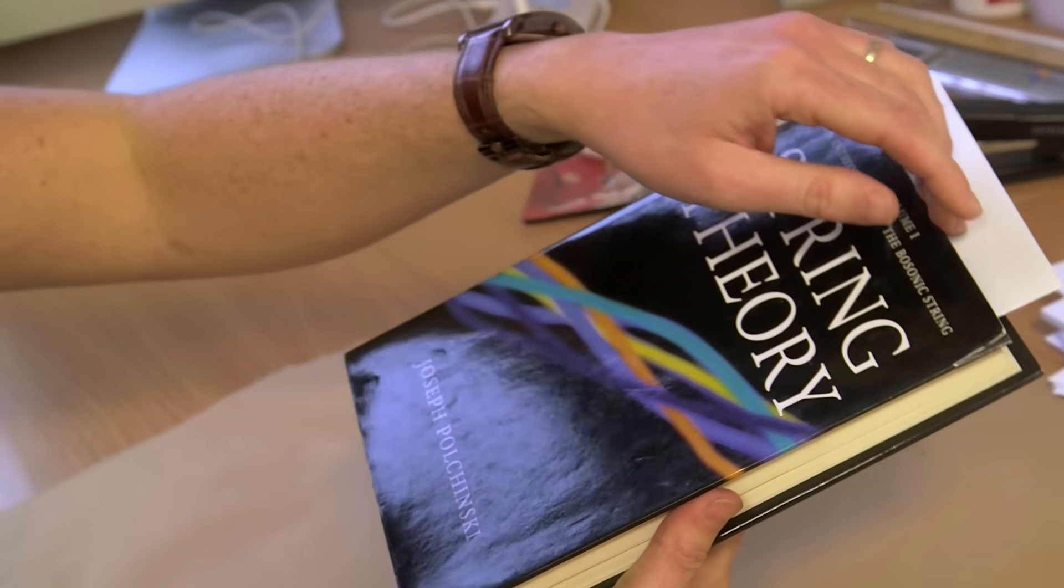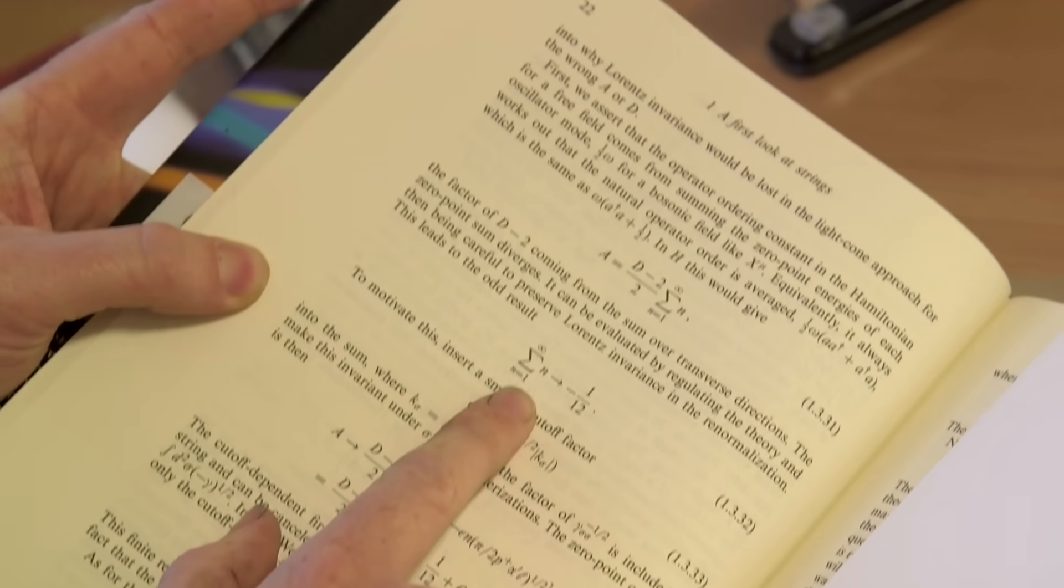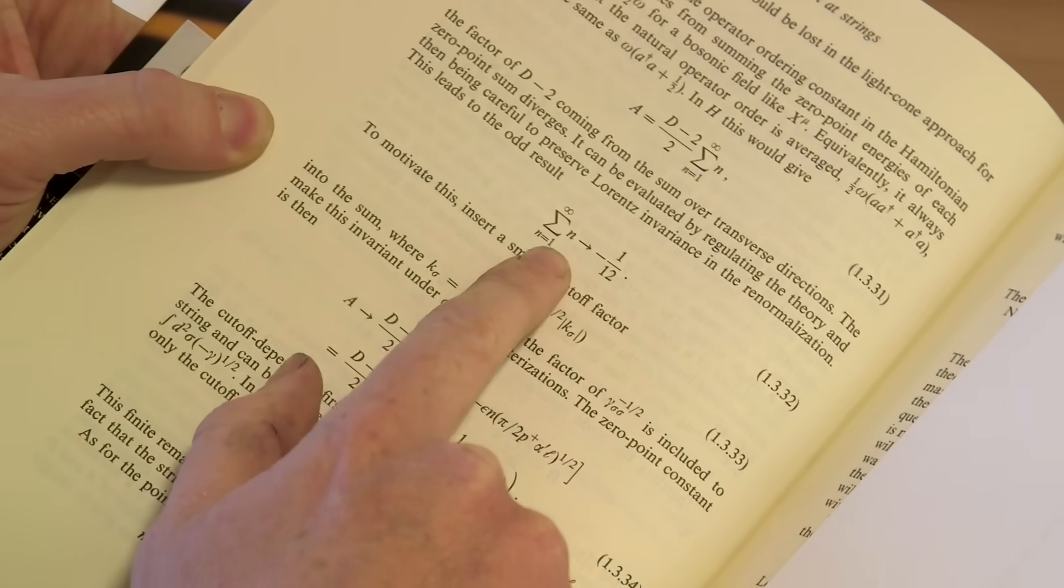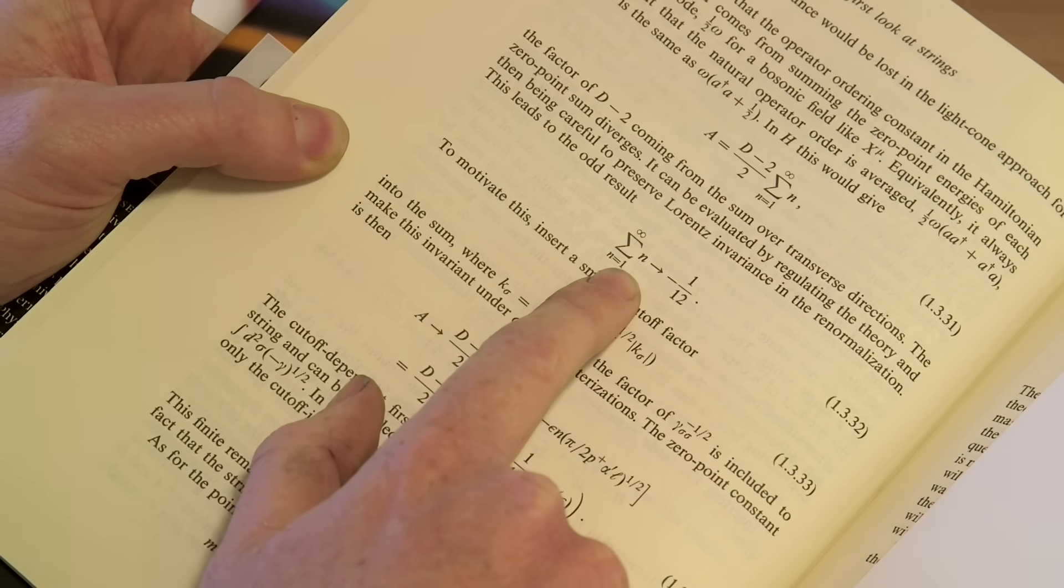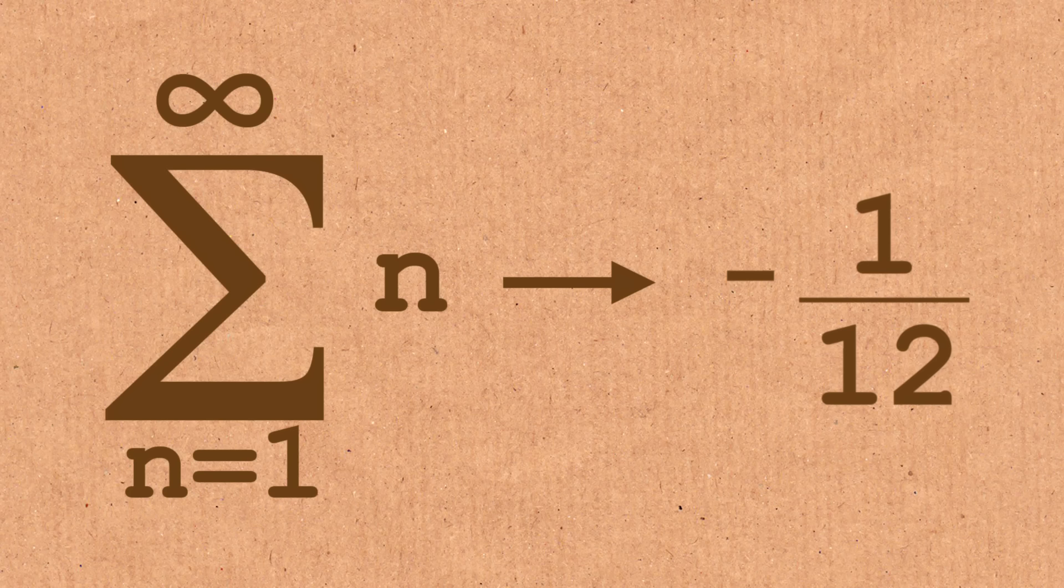This is a very well-known string theory textbook by Joe Polchinski. As you can see, quite early on, page 22, we have this statement here, which is that the sum of all the integers, or the natural numbers, all the way up to infinity, is minus a twelfth.